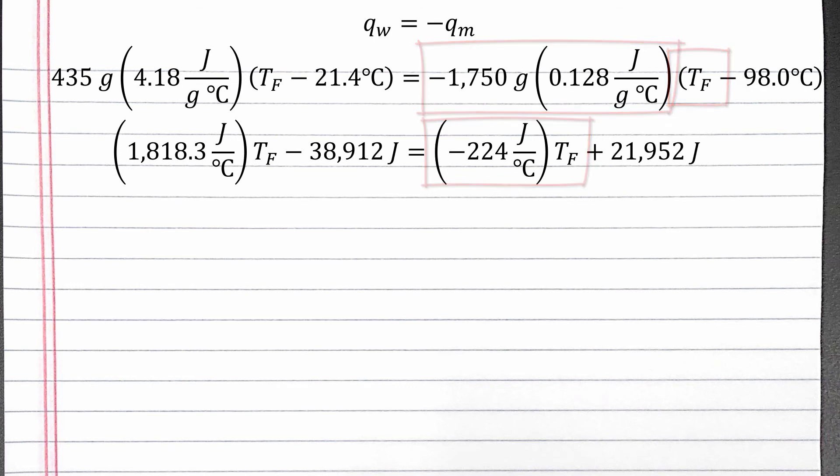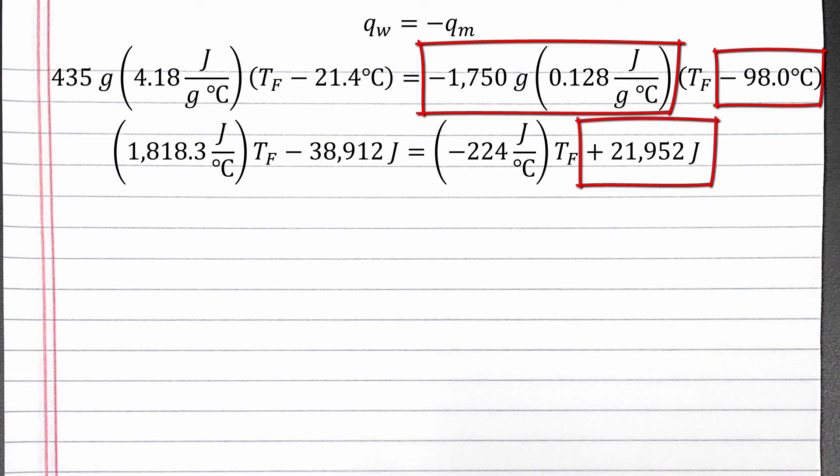And negative 1750 grams times 0.128 joules per gram degrees Celsius times negative 98 degrees Celsius is 21,952 joules. Now we can get all of the T final on the left and all of the numbers on the right.